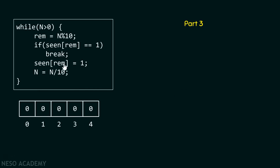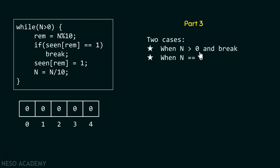In part three, there are two cases to address. The first case is when n is greater than zero and we break out of the loop — this happens when we encounter a digit we have already seen. The second case is when n becomes zero and we exit normally. When n equals zero, it indicates we have not seen any repeated digit. When we break out mid-loop, n is always greater than zero.